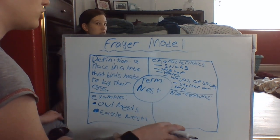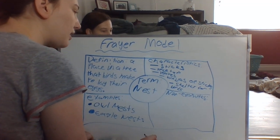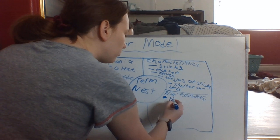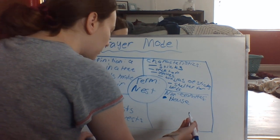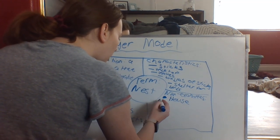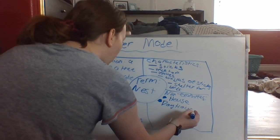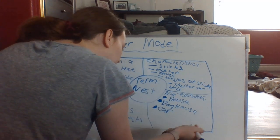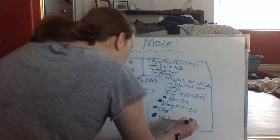Non-examples are basically what is the opposite of, or what is not, a nest. So a house — a house is not a nest for birds. A dog house, a car, a school — those are all non-examples of nests.